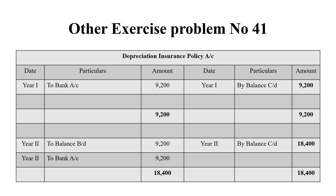For the insurance policy account, we need to pay the first year premium. The first year premium is paid via bank account. In year 1, we put 9,200 rupees on the debit side. On the credit side, we are balancing it out by balance carried down 9,200 rupees.